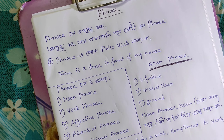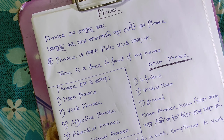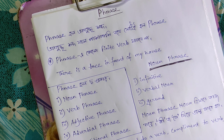A phrase is a group of words. A phrase does not have a finite verb. Finite verb means it does not have a finite or non-finite verb functioning as a main verb.